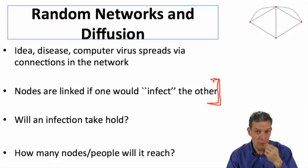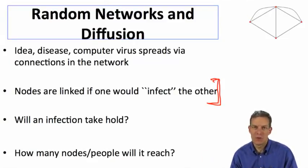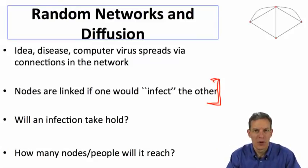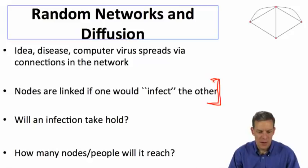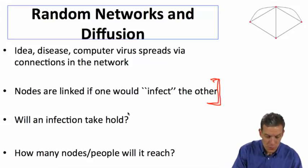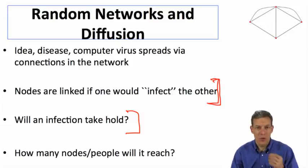So nodes are going to be linked if one would infect the other. And one substantial simplification we're going to make to begin with is that this is going to be an independent and identical probability across links. So each person has an equal chance of infecting any one of their neighbors, whereas that might not be true in reality where you might spend more time interacting with some individuals than others. We'll define the links by the interactions that are necessary for diffusion. We'll think about questions about when will an infection take hold, how many nodes or how many people will it reach.